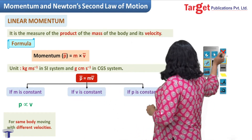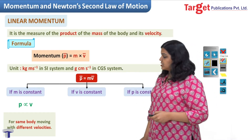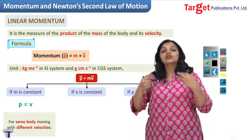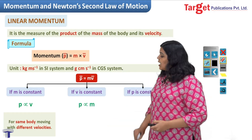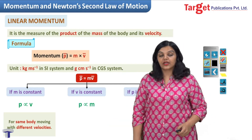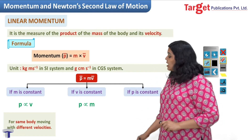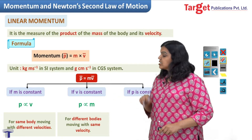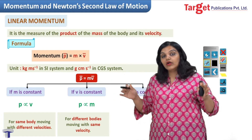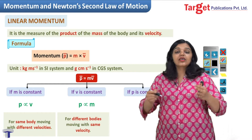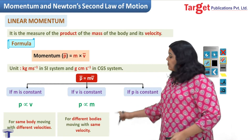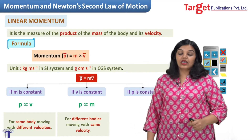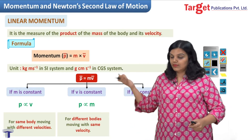Case 2: suppose velocity is constant. If v is constant, then p = m × (constant), meaning p and m are directly proportional. This applies when different bodies move with the same velocity but have different masses. In such a case, the body with greater mass has greater momentum.